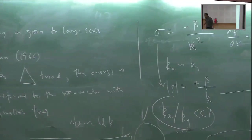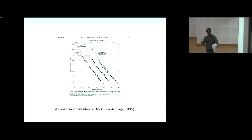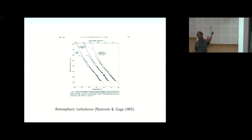Now the second part: a historically important and still not fully settled observation. In the 1980s, Nastrom and Gage asked commercial flights to record velocity measurements on their wings during flight through the troposphere. Based on thousands of flights they computed the power spectra of the meridional and zonal winds and temperature.